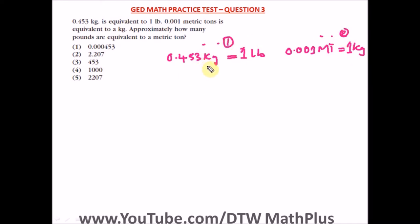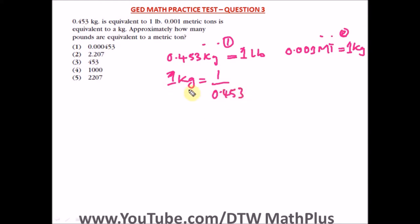So the value of kilogram here — we just divide both sides by 0.453 — will be equal to 1 divided by 0.453. That's 1 kilogram equals 1 over 0.453, and don't forget our pound unit here — LB.